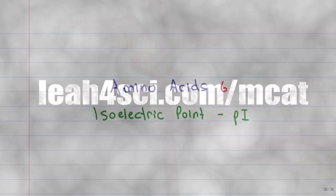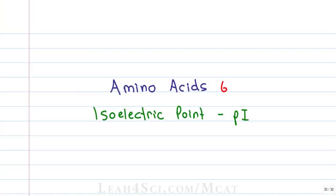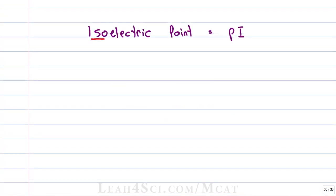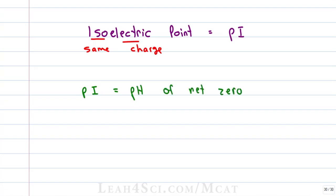Leah here from Leah4Sci.com, and in this video we're going to look at how to find the isoelectric point or PI for amino acids. The isoelectric point comes from 'iso' meaning the same and 'electric' meaning charge. The isoelectric point is the point at which the amino acid has the same charge, or rather a net charge of zero.